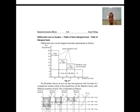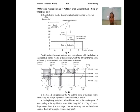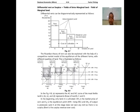Thus, differential rent or surplus is equal to the yield of intramarginal land minus the yield of marginal land. Differential rents can be diagrammatically represented, with rupees (in thousands) on the y-axis and grades of land on the x-axis, showing the cost of cultivation and the marginal and intramarginal land grades.